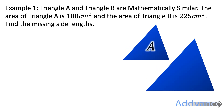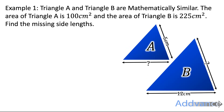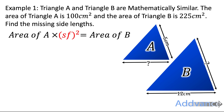Let's look at example one. Triangle A and triangle B are mathematically similar. The area of triangle A is 100 centimetres squared and the area of triangle B is 225 centimetres squared. Find the missing lengths. We're going to start by using the area. We're given both areas so we can use them to find the scale factor. The area of A is 100 and the area of B is 225, so we put those into the formula — replacing area of A with 100 and area of B with 225.